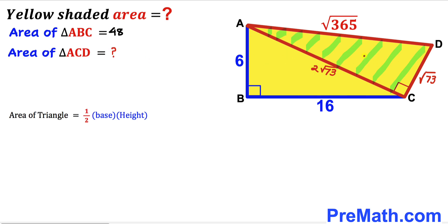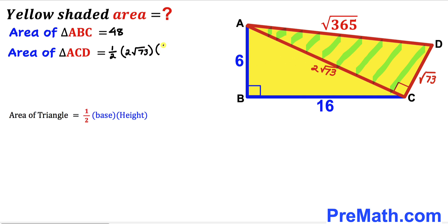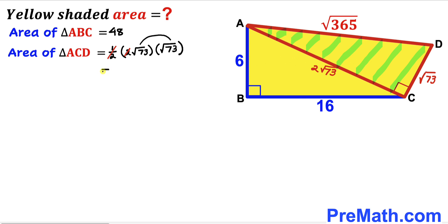Now let's calculate the area of triangle ACD using the same formula: Area = ½ × base × height. The base is 2√73 and the height is √73. So the area = ½ × 2√73 × √73. The 2 and ½ cancel, leaving √73 × √73 = 73. The area of triangle ACD is 73 square units.